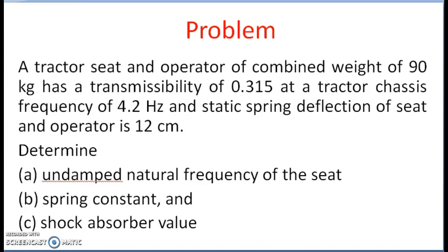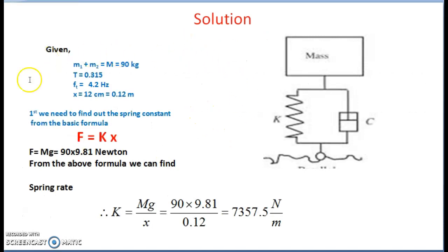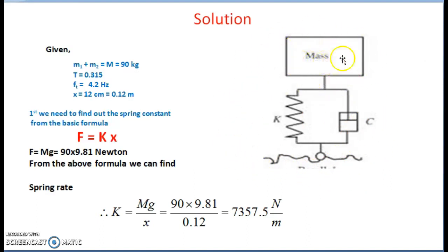Let's solve the problem to find out these unknowns. The mass of the seat and operator is given — let M1 be the mass of the seat and M2 the mass of the operator, so the total mass M is 90 kg. The seat is designed in a particular way — there is damping and a spring.